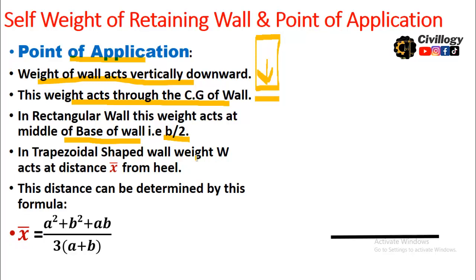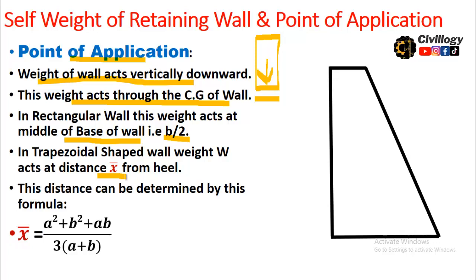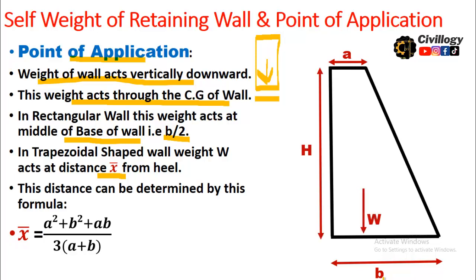For a trapezoidal shape wall, W acts at a distance x from the heel. If the top width is 'a' and the bottom width is 'b', with height h, the weight acts downward through the center of gravity. The distance x-dash from the heel is determined using a specific formula. Keep this formula in mind — it gives the point of application of weight W for a trapezoidal wall.